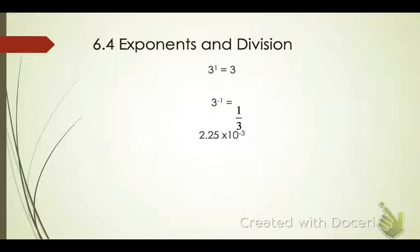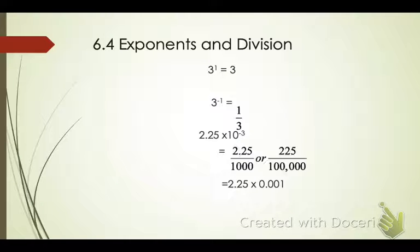So what if I have scientific notation — 2.25 times 10 to the negative 3? Well, that means I have 2.25 over 1,000, but I can't have a decimal in a fraction. Or I have 225 over 100,000. I can also write that as 2.25 times 10 to the -001. So write that in your notebook. If you have a question, write that in the side. But we're going to do some more practice problems and some more understanding.